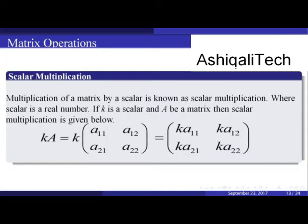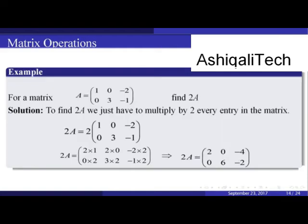Multiplication of a matrix by a scalar is known as scalar multiplication, where the scalar is a real number. If k is a scalar and A is a matrix, then scalar multiplication is given by k×A, where all entries of matrix A are multiplied by k. For a given matrix A, to find 2A, we multiply 2 by every entry in A, giving 2A = [[2,0,-4],[0,6,-2]].